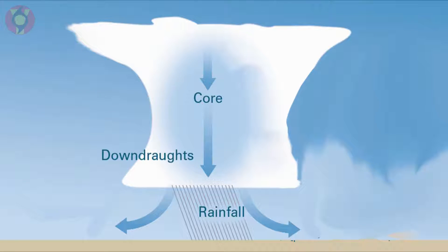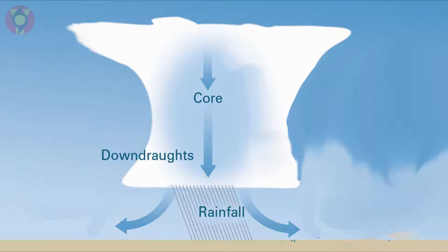The reason why wind shear is important for thunderstorms can be understood by thinking about where the cool rain will fall out of the thunderstorm. In a case where there is weak wind shear, the thunderstorm grows vertically because there is little wind to push the cloud in any direction. The cloud generates rain that falls back through the core of the storm, bringing cooler air down to the surface which can cut off the warm air feeding the thunderstorm. This can effectively kill the thunderstorm quite rapidly.